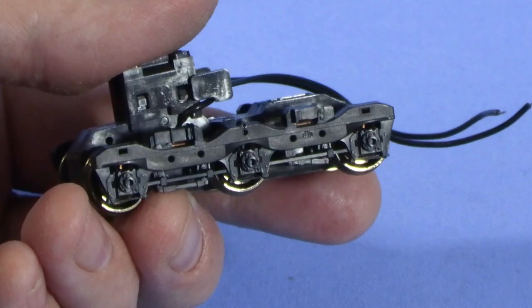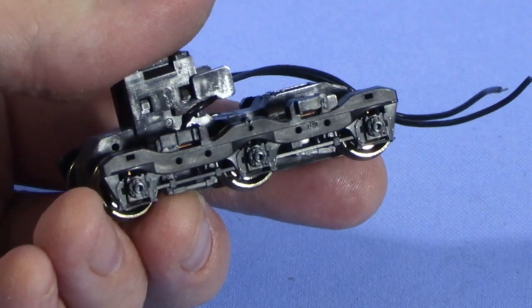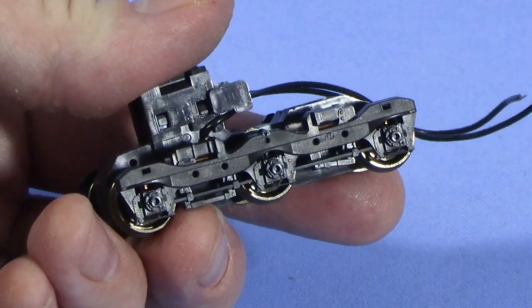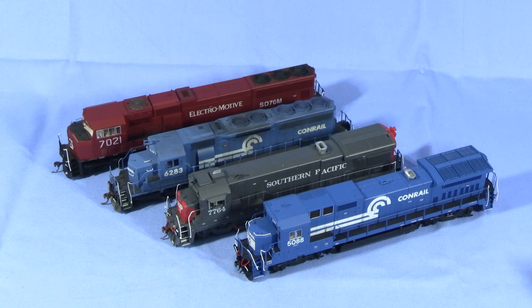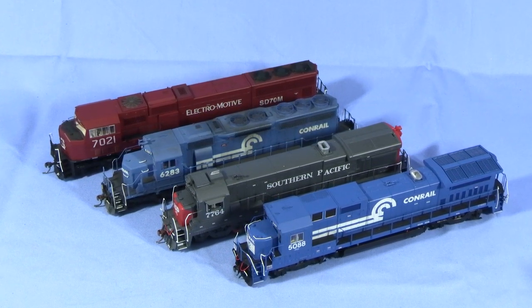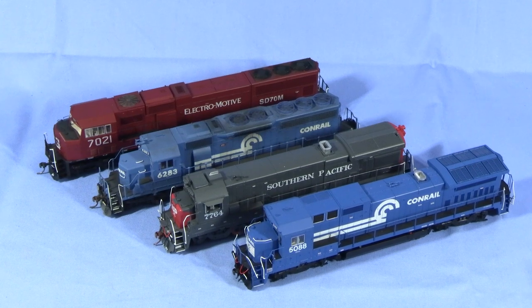The other design is what I think of as the Kato style. I'm not sure if Kato was the first manufacturer to use this design or not, but that's what I'm calling it. Many models, including some Athern, Atlas, Kato, some Proto 2000, Rapido, Scale Trains, and others use some variation of this design.